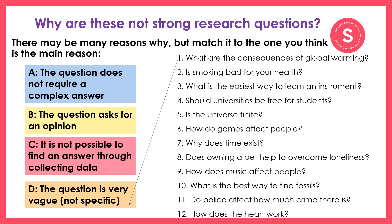Let's now have a look at a number of research questions and ask: why are they not strong research questions? On the left there are four explanations: A — the question doesn't require a complex answer; B — it asks for an opinion; C — it's not testable, so it's not possible to find an answer through collecting data; and D — it's vague, in other words not specific. Match up each question to A, B, C, or D. You can type the responses on the worksheet or write it down, writing the number followed by the appropriate letter — for example, 1D. 'What are the consequences of global warming?' — that one is not very specific. Pause the video and play it again when finished.